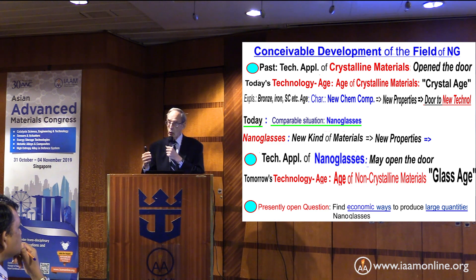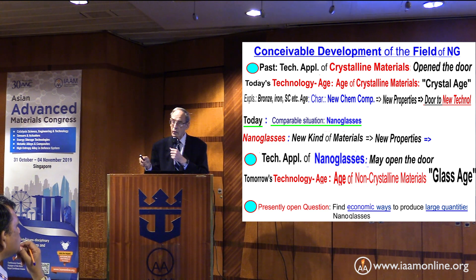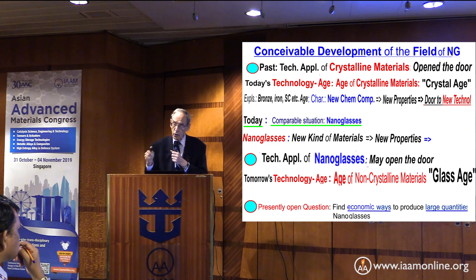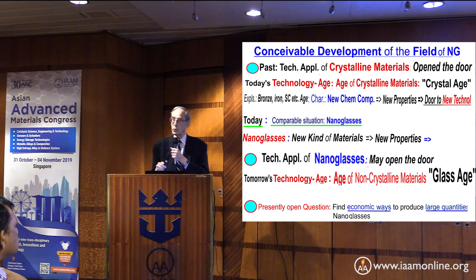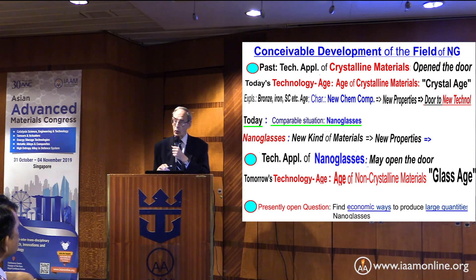We are in a similar situation now with nanoglasses: we can produce non-crystalline materials with very attractive, fundamentally new properties — new atomic structure, new electronic structure — but the bottleneck at the moment is the expense of producing them. If somebody finds a way to produce them economically, that would open the whole door for a new technology age.